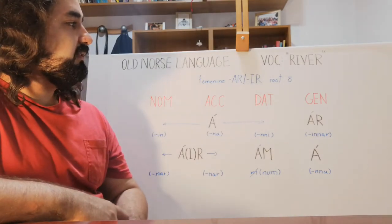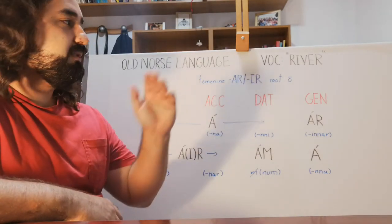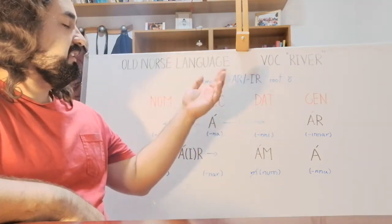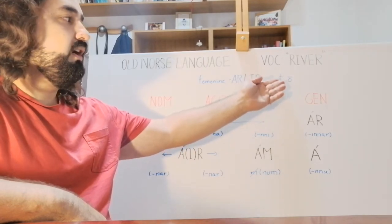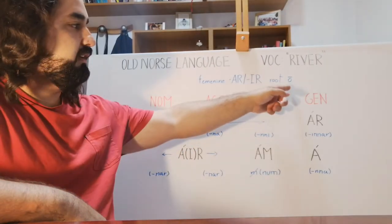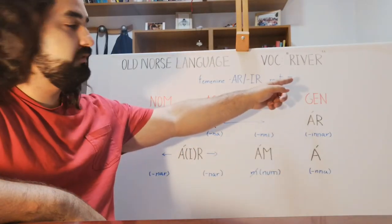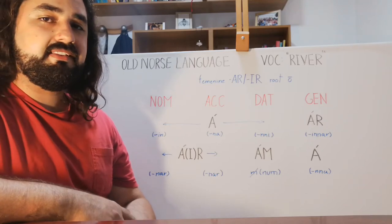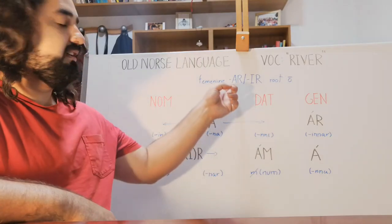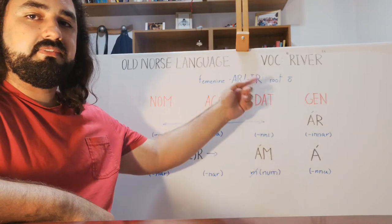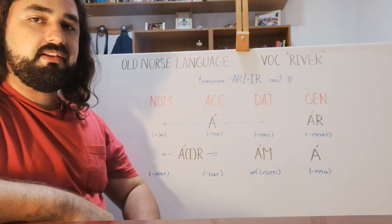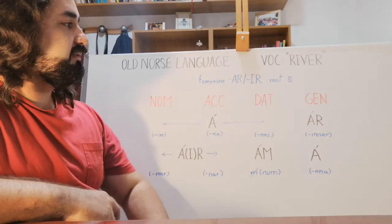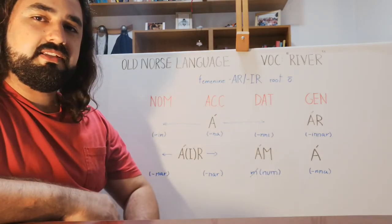For the word river, we will first notice what kind of word it is. It is a feminine word which takes the paradigm of the long ó root with a macron, and it also can be classified inside the genitive singular -ar and the genitive plural -ir inside the feminine paradigm. This information will give us a slight idea on how it declines.